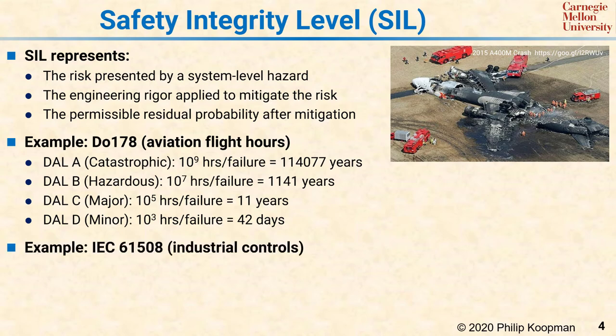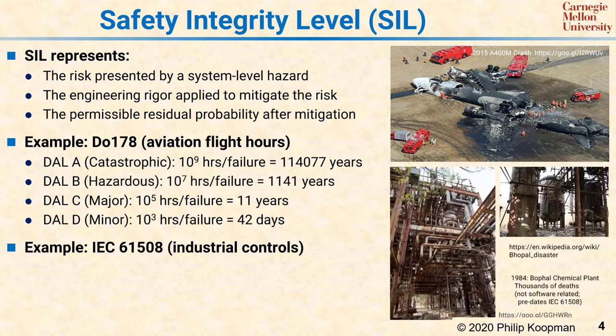A different example is the IEC 61508 functional safety standard, which is used by the chemical process industry and for other industrial control applications. The consequences of an extreme failure of these systems can involve thousands of deaths, as happened in 1984 at Bhopal, India, with a toxic chemical gas release. It should be noted that IEC 61508 was not in existence at the time of Bhopal, but hopefully this standard has served to mitigate the risk of such catastrophic events as computer controls have become pervasive in that industry.